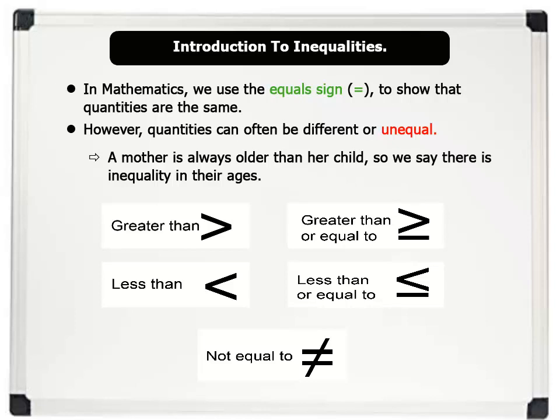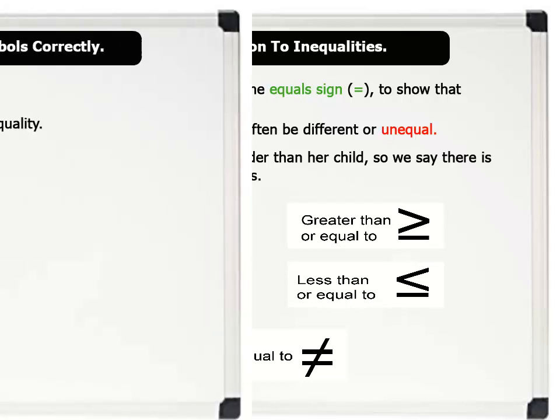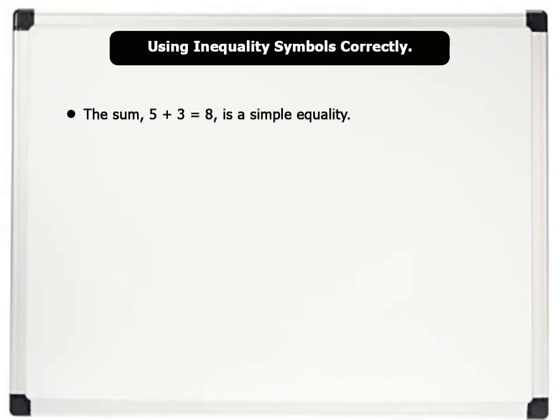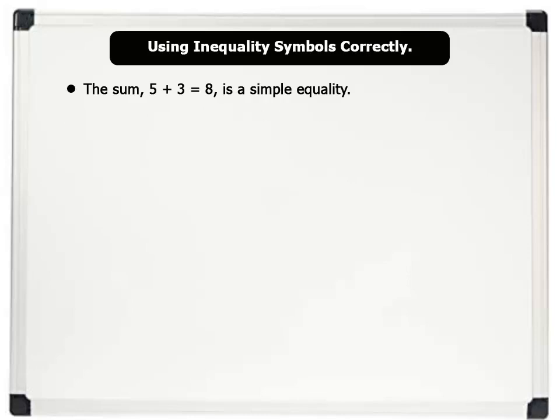Now, let us learn how to use these inequality symbols correctly. The sum, 5 plus 3 equals 8, is a simple equality. However, we know that quantities are often not equal.